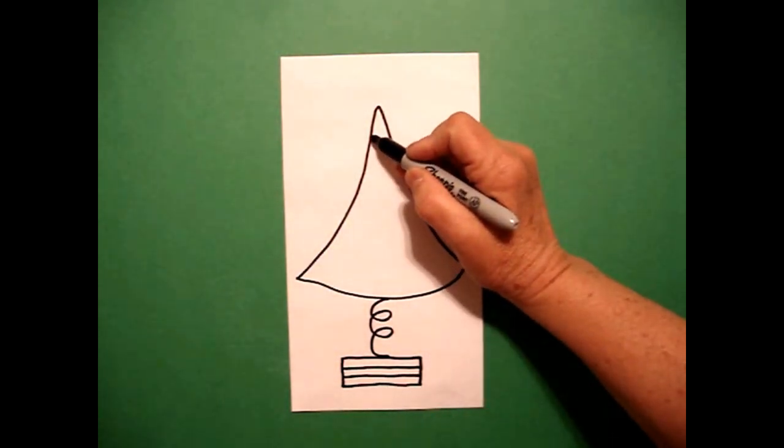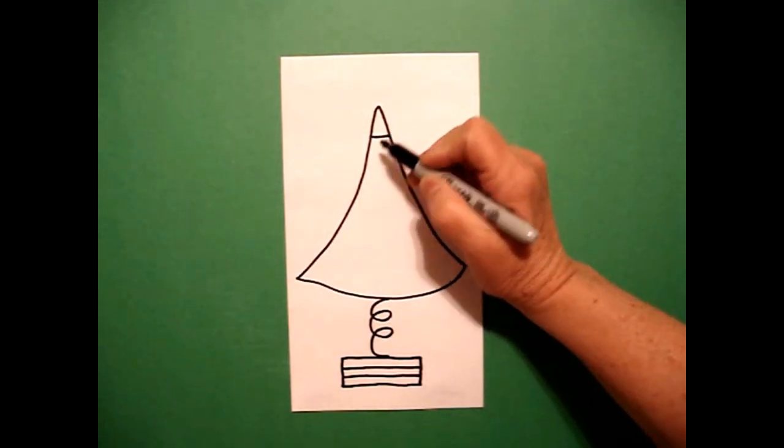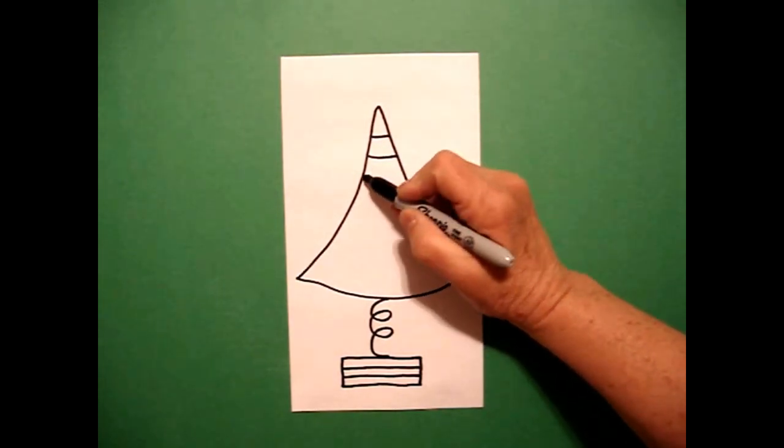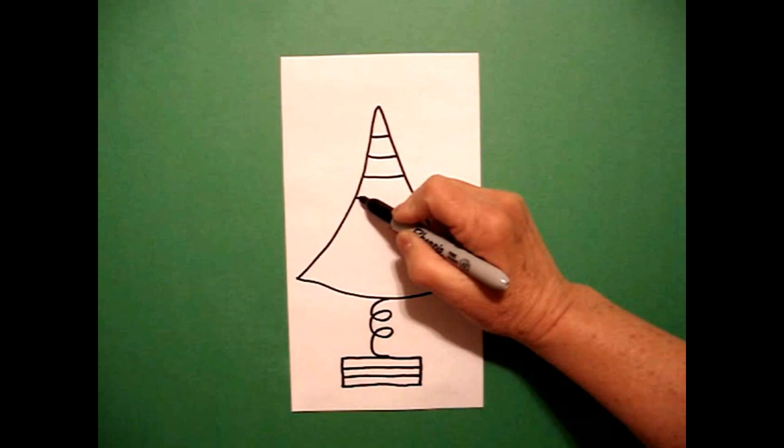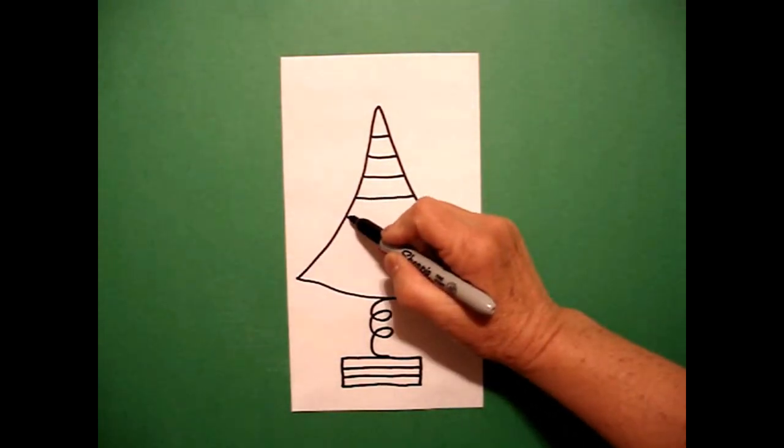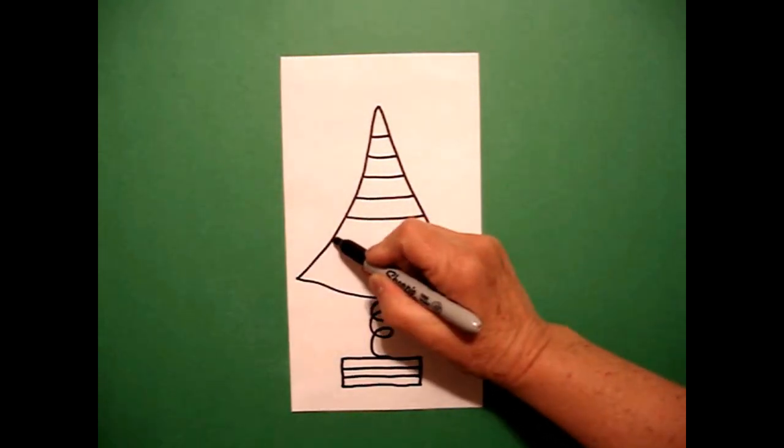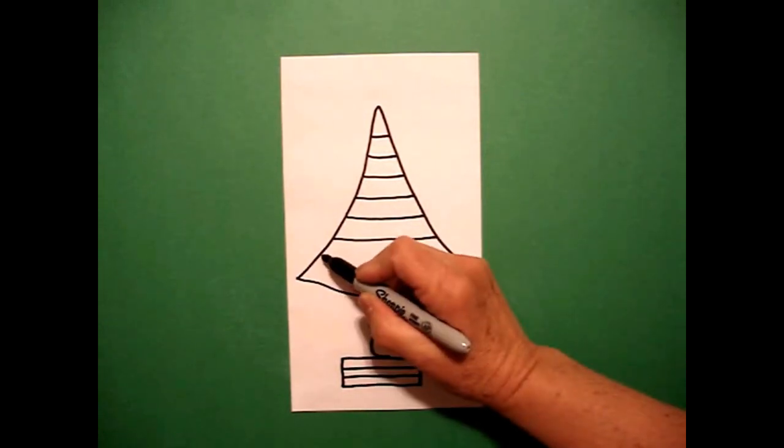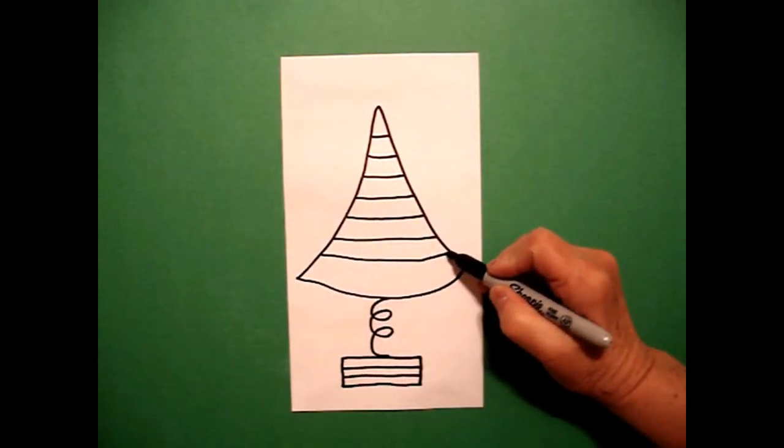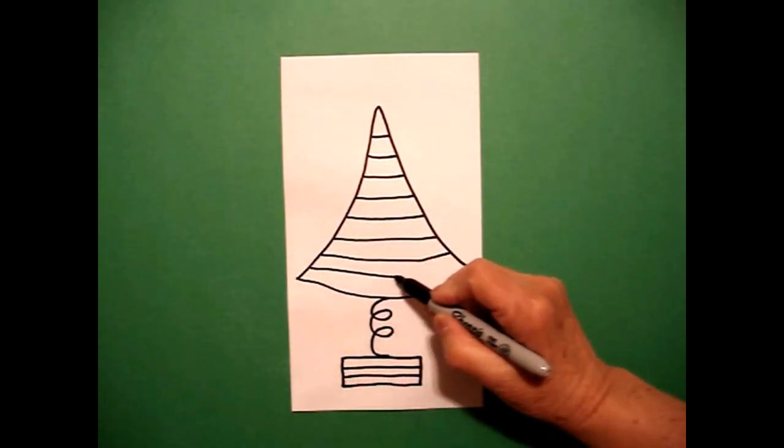Starting at the top, I'm going to make my stripes. So I draw slightly curved lines all the way across, all the way down. Keep going. I think I can fit one more.